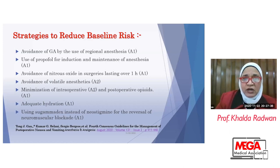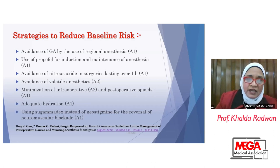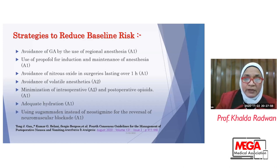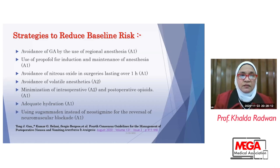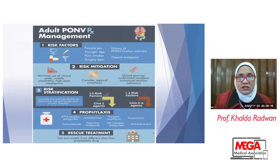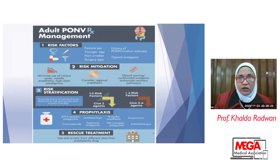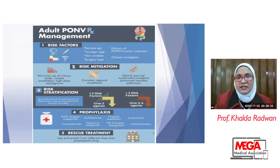We have to avoid the use of general anesthesia and replace it with regional anesthesia, use propofol for induction and maintenance of anesthesia rather than inhalational anesthetics. Nitrous oxide must be avoided in surgeries lasting more than one hour. Minimize intraoperative and postoperative opioid intake, ensure adequate hydration, and use sugammadex instead of neostigmine for reversal of neuromuscular blockade, which is found to have a protective effect for PONV. This is consistent with the consensus guidelines for the management of PONV.